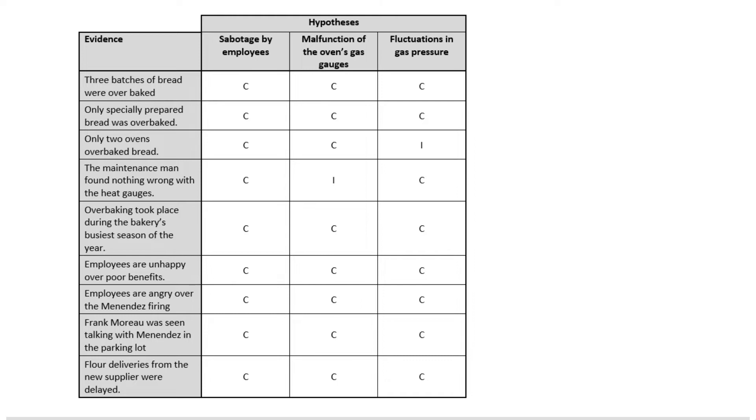We flagged that it's inconsistent. We could go through and look for other bits of inconsistent evidence, like the maintenance man checked the gauges and found that they were fine, which would suggest that maybe it's sabotage by the employees that's driving this whole thing, because that's the one that has all of the consistent evidence behind it, whereas the other two at least have had one piece of inconsistent information driving it.